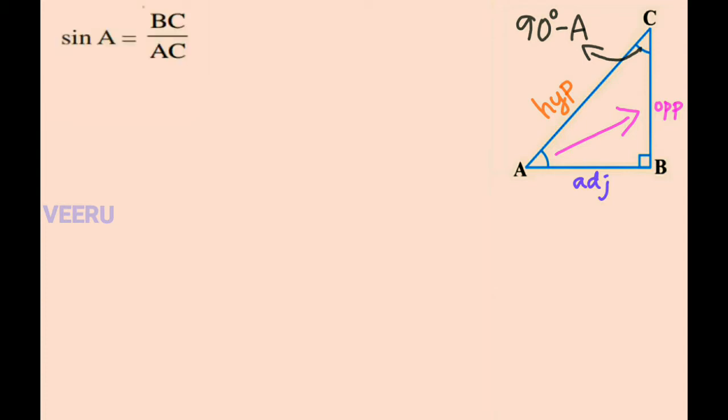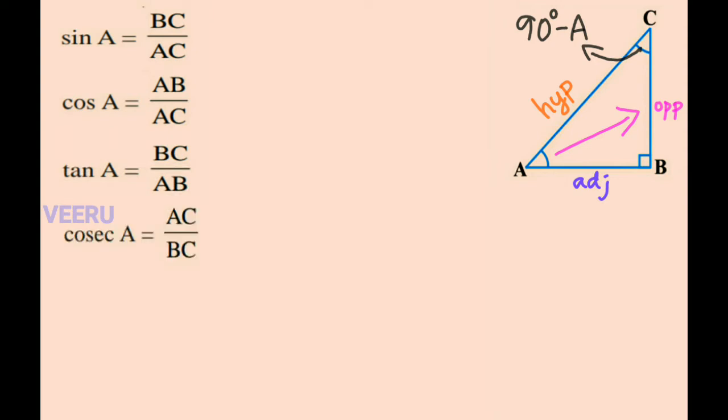Sin A is equal to BC by AC. Cos A is equal to AB by AC. Tan A is equal to BC by AB. Cosec A is equal to AC by BC. Sec A is equal to AC by AB. Cot A is equal to AB by BC.